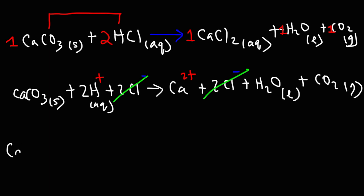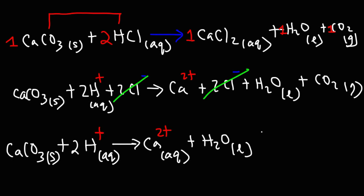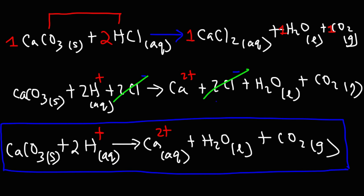Now what we have left over is known as the net ionic equation. So we have solid calcium carbonate reacting with hydrogen ions in a solution. And this is going to dissolve the calcium carbonate. So it's going to liberate the calcium two plus ions in calcium carbonate. And the hydrogen ions will react with carbonate to produce liquid water and gaseous carbon dioxide. So this is the net ionic equation for the reaction between calcium carbonate and hydrochloric acid.